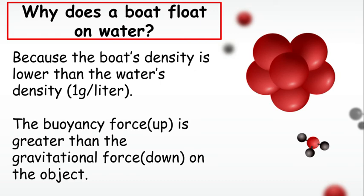Why does a boat float on water? Because the boat's density is lower than the water's density. Water's density, as you remember, is approximately very close to one gram per liter. And the buoyancy force is an upward force pushing up. And the gravitational force is a downward force. As you know, if you drop a golf ball from a building, that golf ball is going to go down.